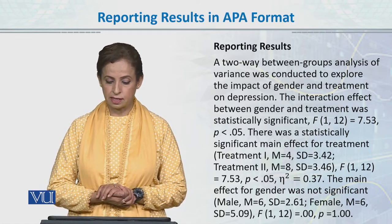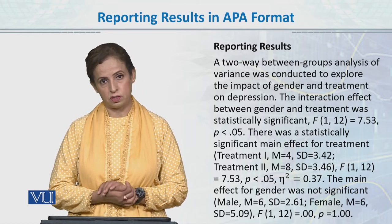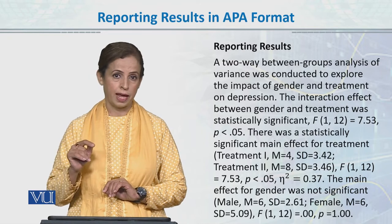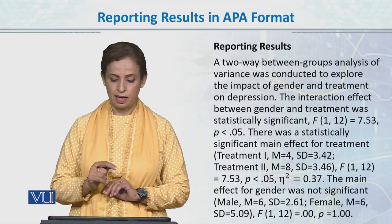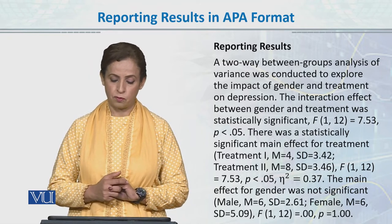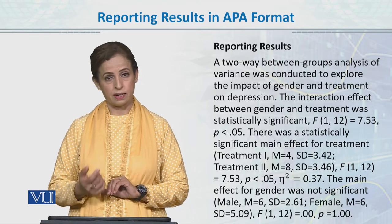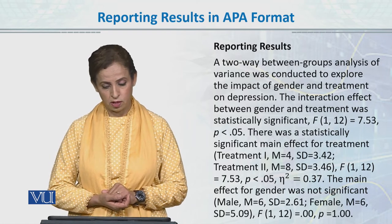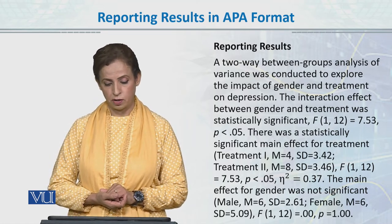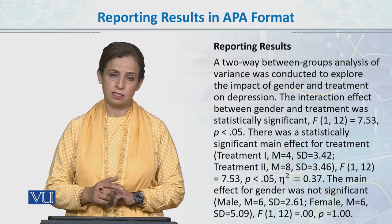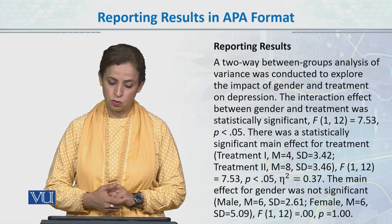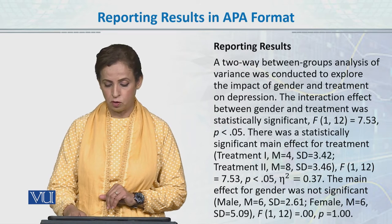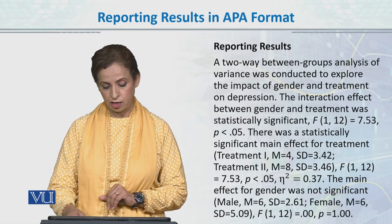There was a statistically significant main effect for the treatment. First, you report the interaction effect with its value and P value. Then you report the main effect for treatment. We report treatment one's mean — M = 4 — and standard deviation = 3.42. Simultaneously, you report treatment two's mean and standard deviation, along with the F value for between and within degrees of freedom.